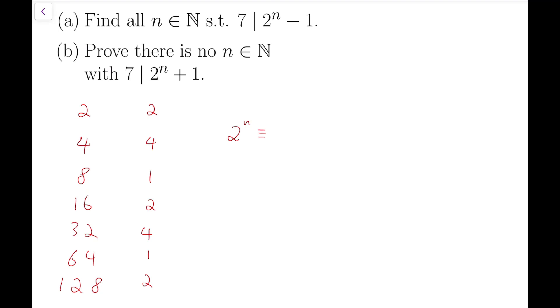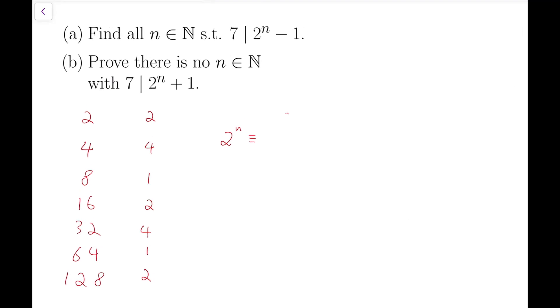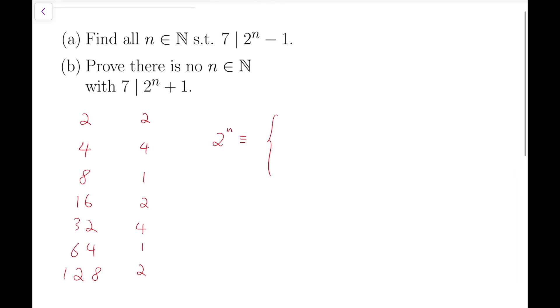So to summarize, the pattern can be written as: 2^n has remainder 2, 4, or 1 depending on the remainder when n is divided by 3, because the period of the sequence is 3.